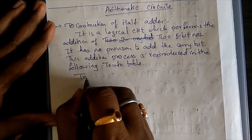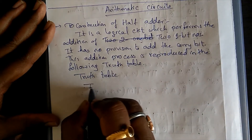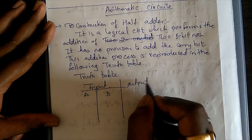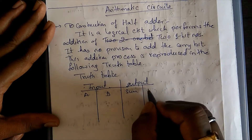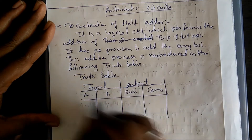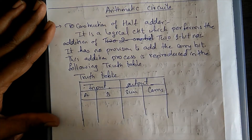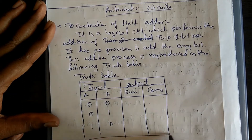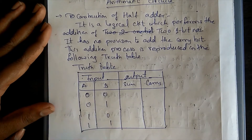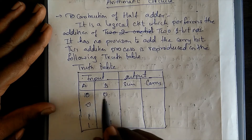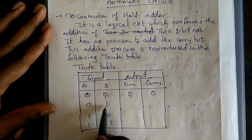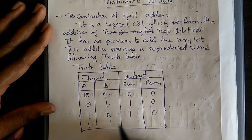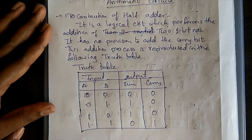So now we will write the truth table. We have two inputs: A and B, and two outputs: Sum and Carry. The four input combinations give: 0+0 → sum 0, carry 0; 0+1 → sum 1, carry 0; 1+0 → sum 1, carry 0; 1+1 → sum 0, carry 1, as we have done in binary arithmetic addition.